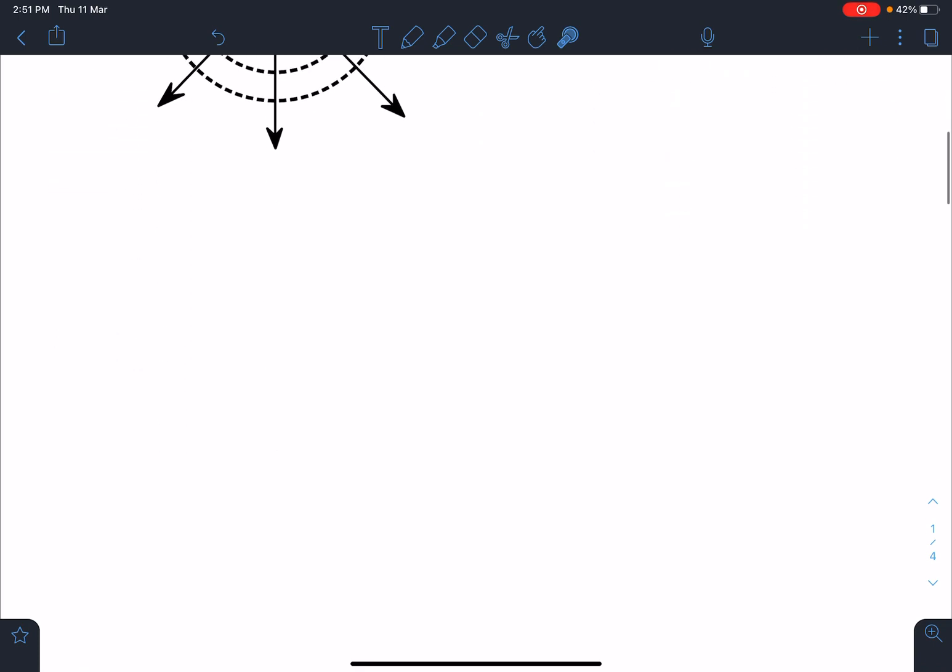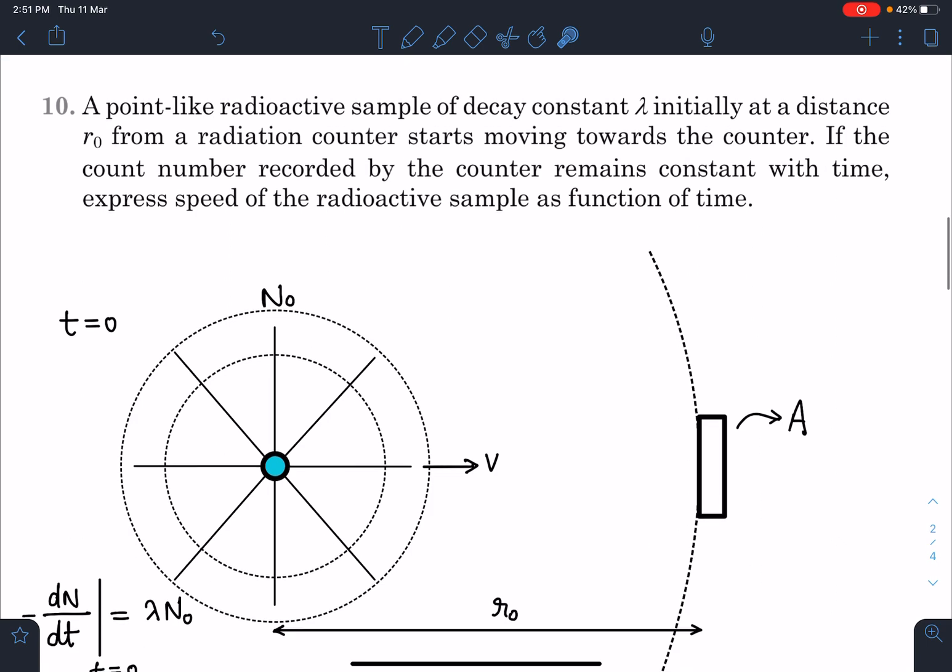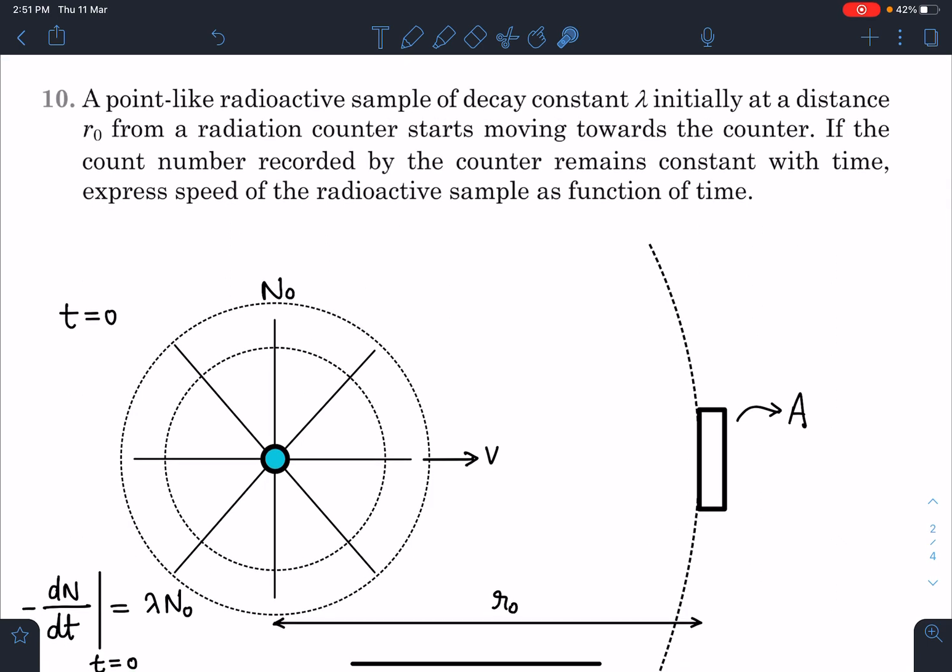It is from Pathfinder. Here is the problem statement: A point like radioactive sample decay constant lambda initially at a distance of R0 from radiation counter. It starts moving towards the counter. If the count number recorded by the counter remains constant with time, then express speed of radioactive sample as a function of time.